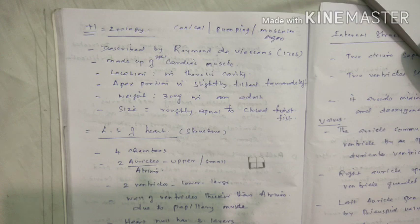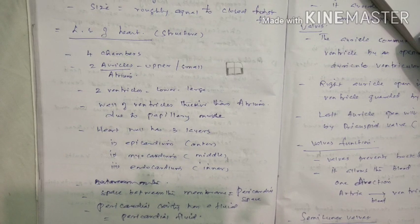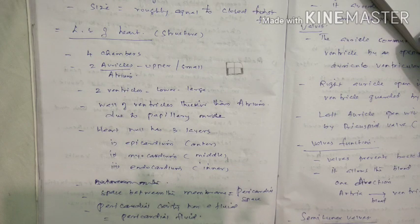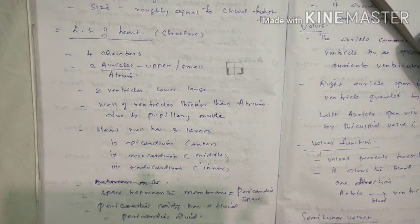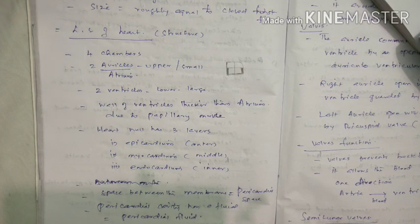The weight of an adult heart is just 300 grams. Now we will see the internal structure and external features of the heart. The heart is a muscular organ made up of cardiac muscles, and it is covered by a double-wall membrane called the pericardial membrane, which gives protection to the heart.